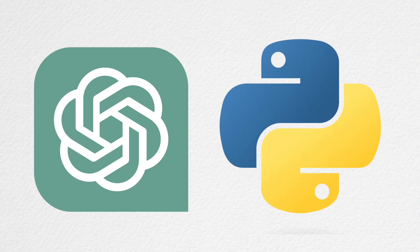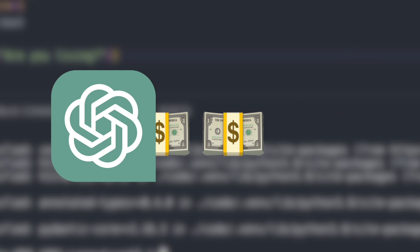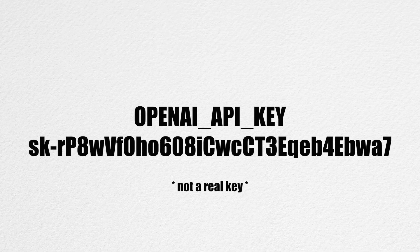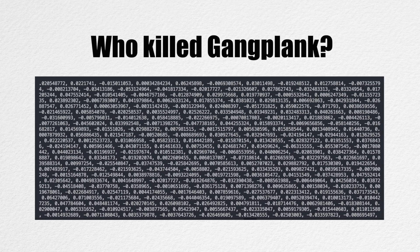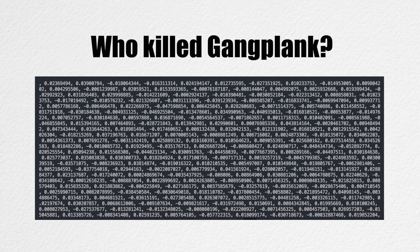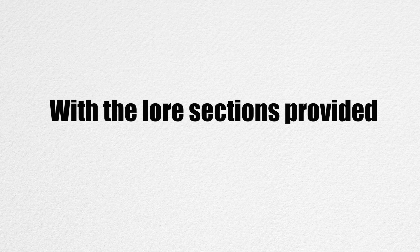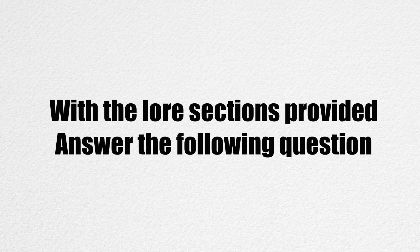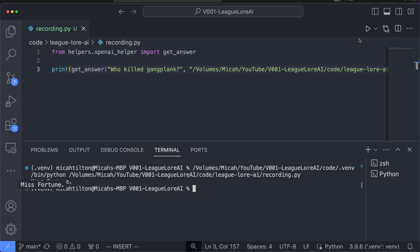We've all heard of ChatGPT, but did you know that you are able to access ChatGPT through code? It is pretty straightforward — just install a Python package and give OpenAI your money. You'll get an API key that you can use in your code to access OpenAI services. So when a user asks a question, we will convert that question into a vector and take the two most similar lore sections to provide to ChatGPT with a simple prompt: with the lore sections provided, answer the following question. After some thinking and self-reflection on its life purpose, it responds with an answer.